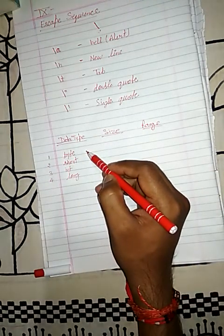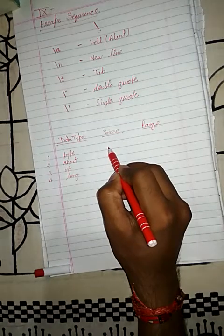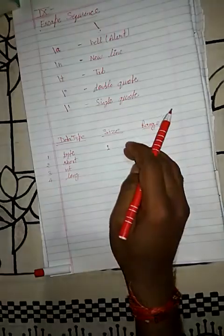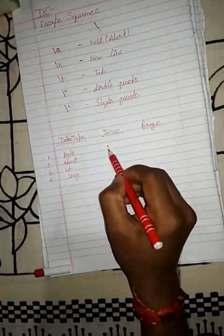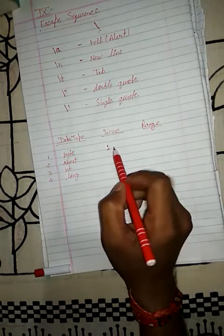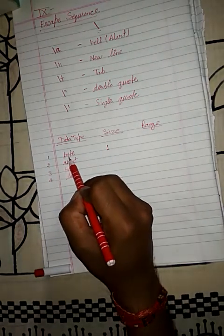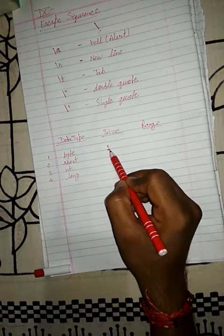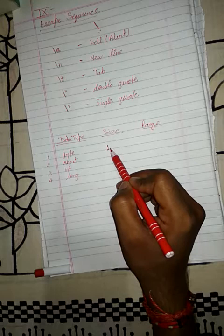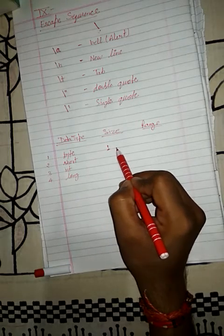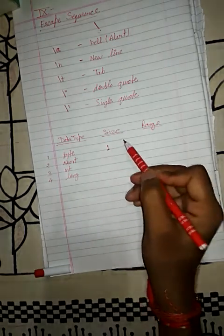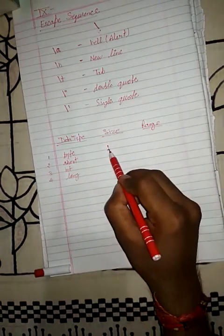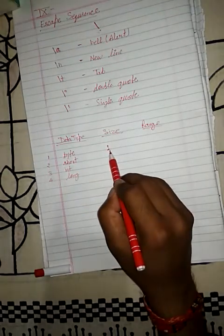First, the byte data type. The size of the byte data type is one byte. Note that the first 'byte' refers to the data type name, while 'one byte' refers to memory representation. So the size of byte is one byte.